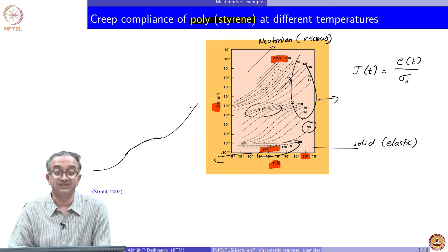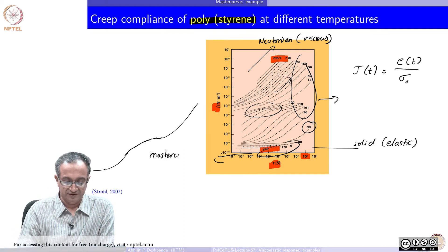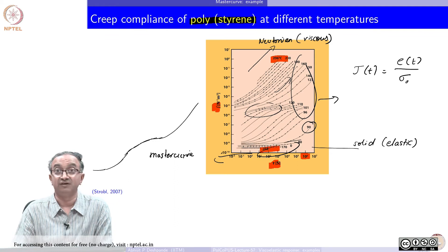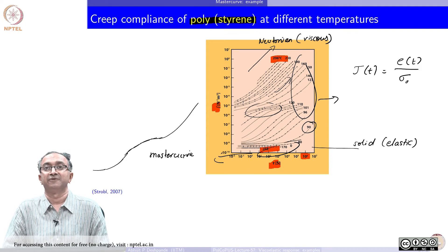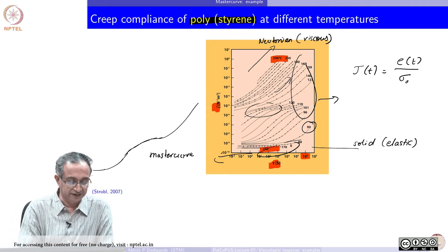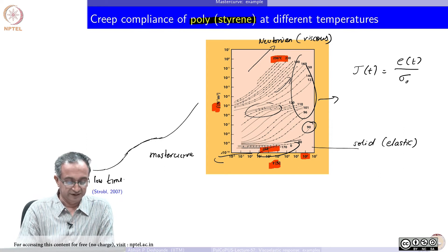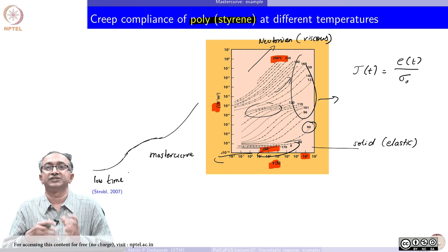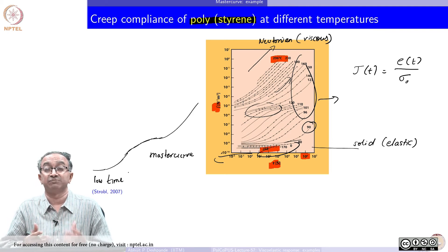And why do we get a master curve like this? What do the different regions in this master curve imply? Basically, what we are trying to suggest through this master curve is very low time, we have material elastic. If we do not give my chains enough time to untwist or do any deformation, there is no segmental mobility. In that case, basically, we have no compliance.